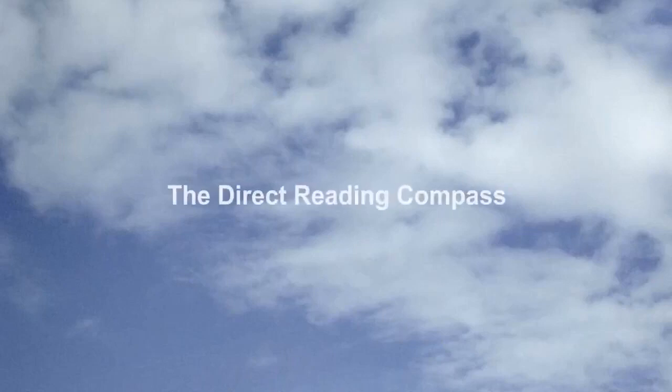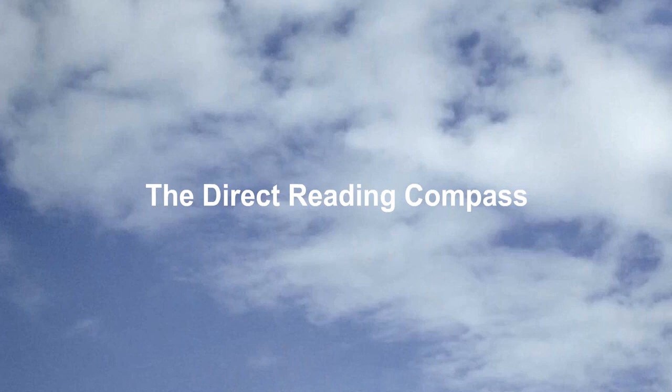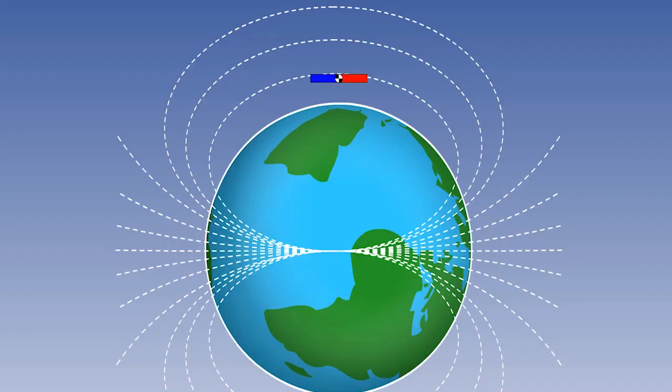This lesson deals with the direct reading or direct indicating magnetic compass and describes the principle of operation, the effects of acceleration and turning errors, and how to interpret the direct reading compass indications in a turn. A magnetic compass uses the horizontal component of the Earth's magnetic field to indicate the direction over the surface of the Earth of the magnetic poles, and the aircraft's heading is based on this magnetic datum.